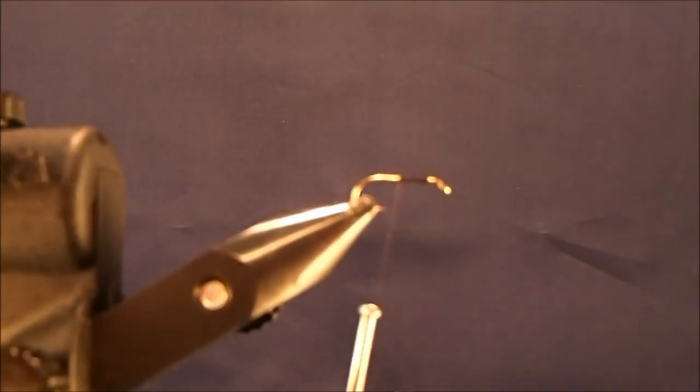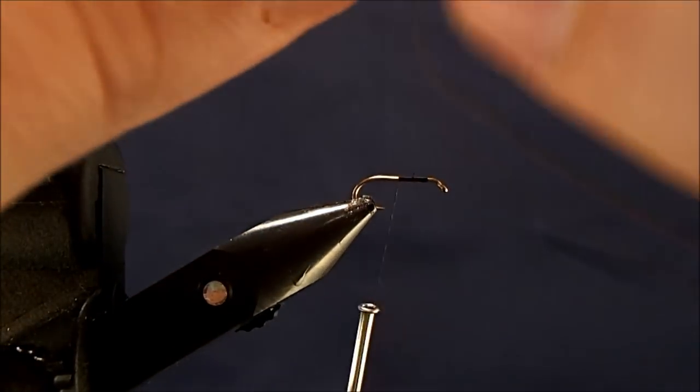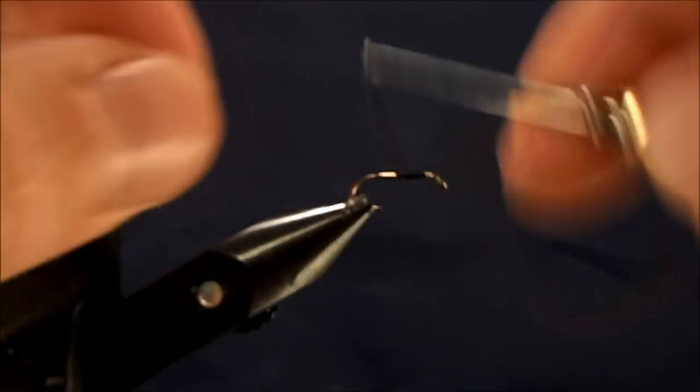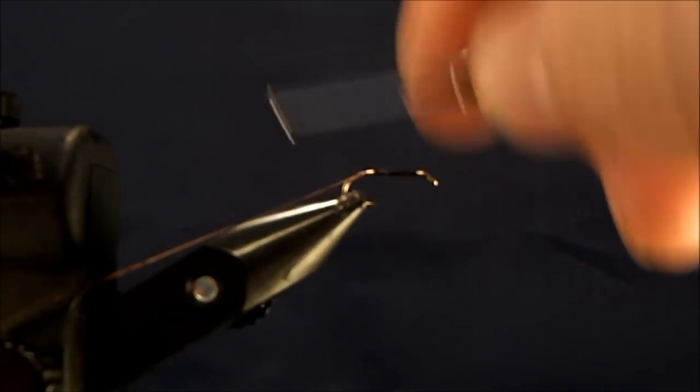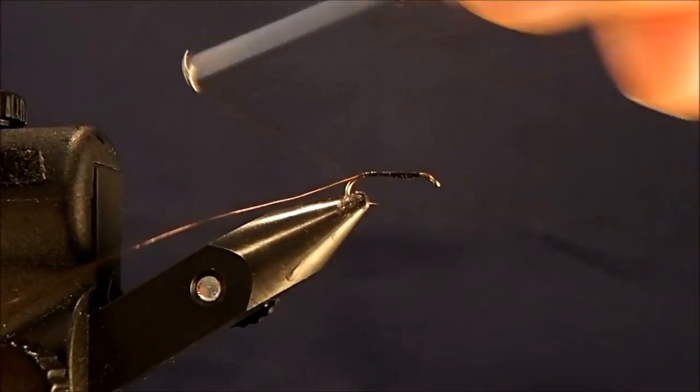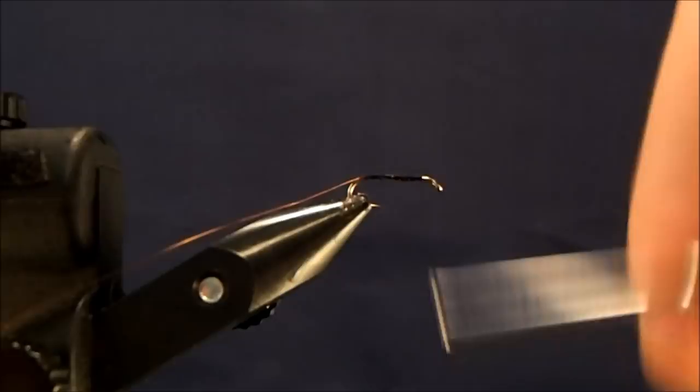Which is just a very thin copper wire. I'm going to add that to the hook, and I'm going to start to wind this down and create a bit of a taper. I'll bring this all the way down just past the bend of the hook so it gives it some shape to the body, and then I'll just start to build that up.